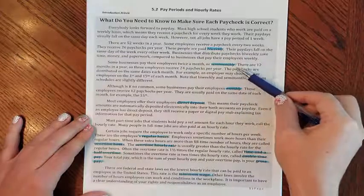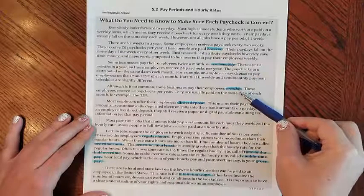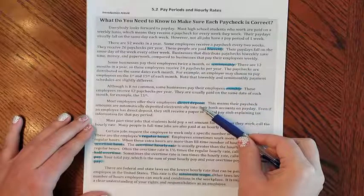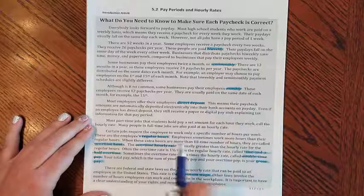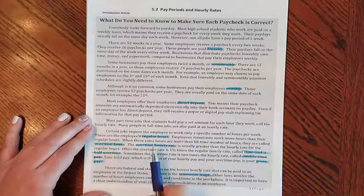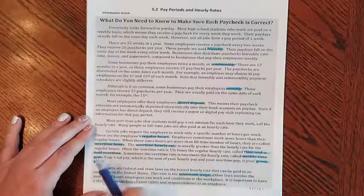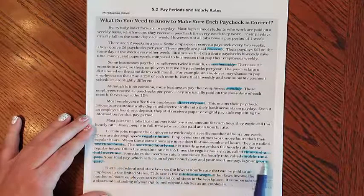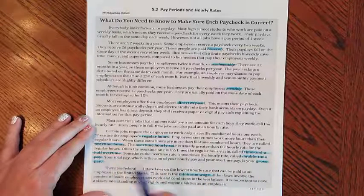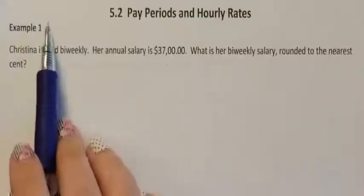The vocabulary words include: bi-weekly, semi-monthly, monthly, direct deposit, regular hours, overtime hours, overtime hourly rate, time and a half overtime, double time pay, gross pay, and minimum wage. Example 1.